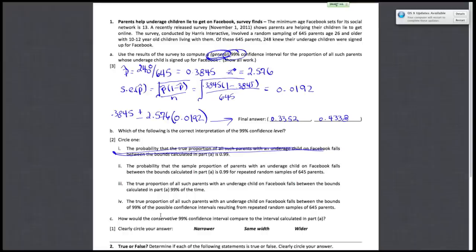Statement 2 says the probability that the sample proportion falls between the bounds is 0.99 for repeated random samples. The sample proportion always falls inside the interval because that's what you're constructing the interval around — so statement 2 is also completely wrong. Statement 3 says the true proportion falls between the bounds 99% of the time. Statements 3 and 1 are essentially equivalent: once you calculate your interval, the true proportion either falls in 0% or 100% of the time. Statement 3 is also false.